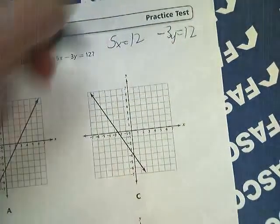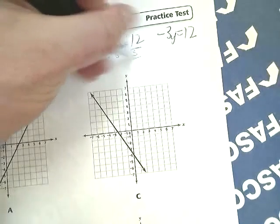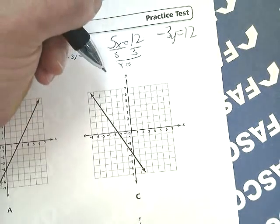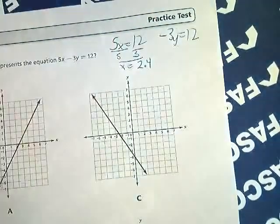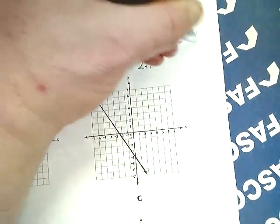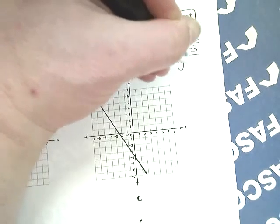Now I'm just going to solve these. x is equal to 2.4 or 2 and 2 fifths. And then divide by negative 3. y is equal to negative 4.